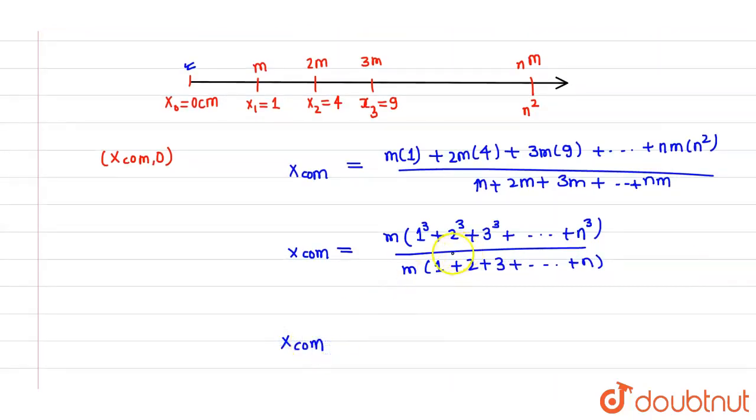know the formula for finding out the sum of cubes of natural numbers, which is [n(n+1)/2]². This is the formula for finding out the sum of cubes of natural numbers, divided by the formula for finding out the sum of